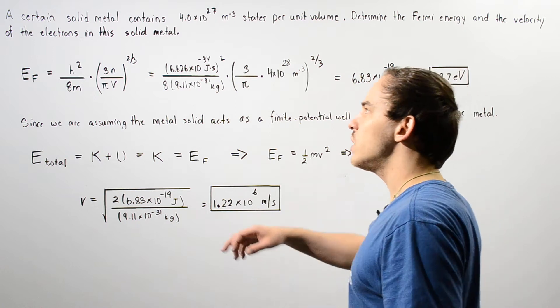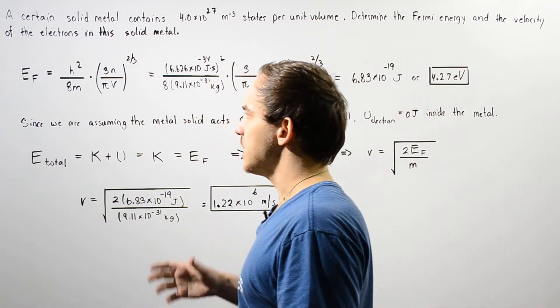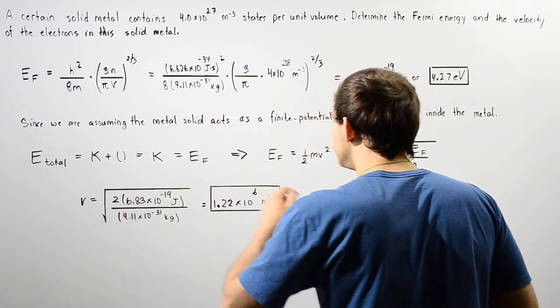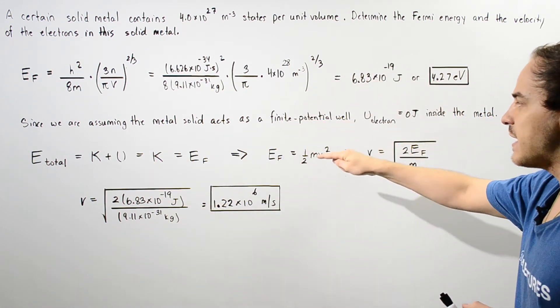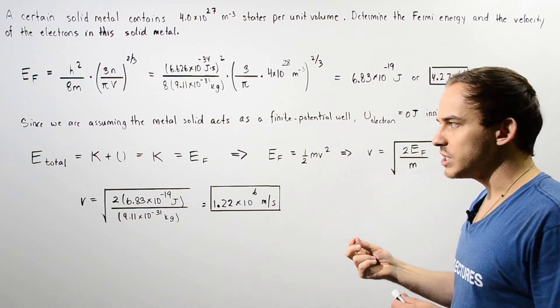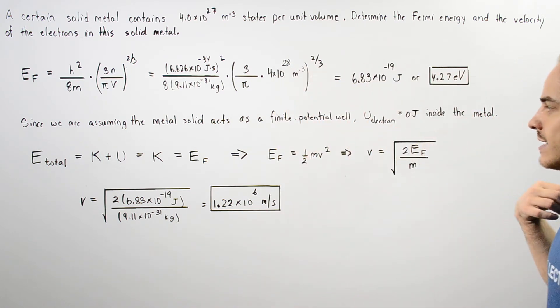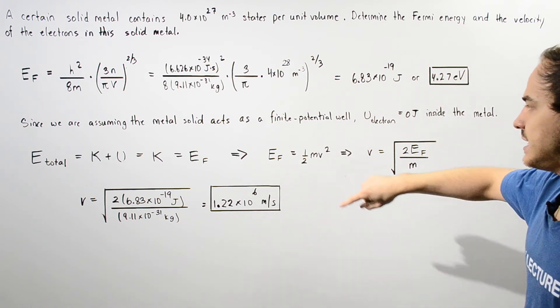Our Fermi energy is equal to one half mv squared. We can solve for the velocity and we see that the velocity is equal to the square root of two multiplied by this energy given in joules divided by the mass given in kilograms.